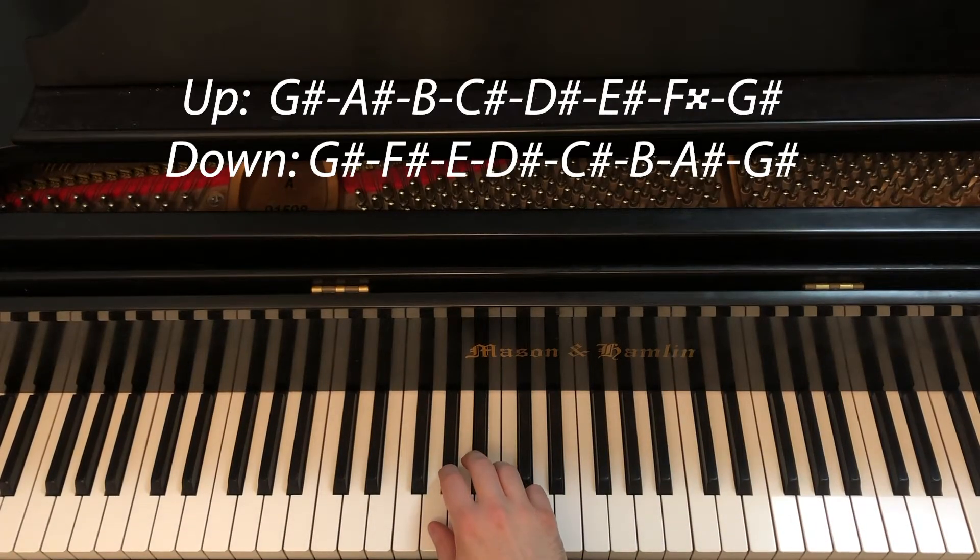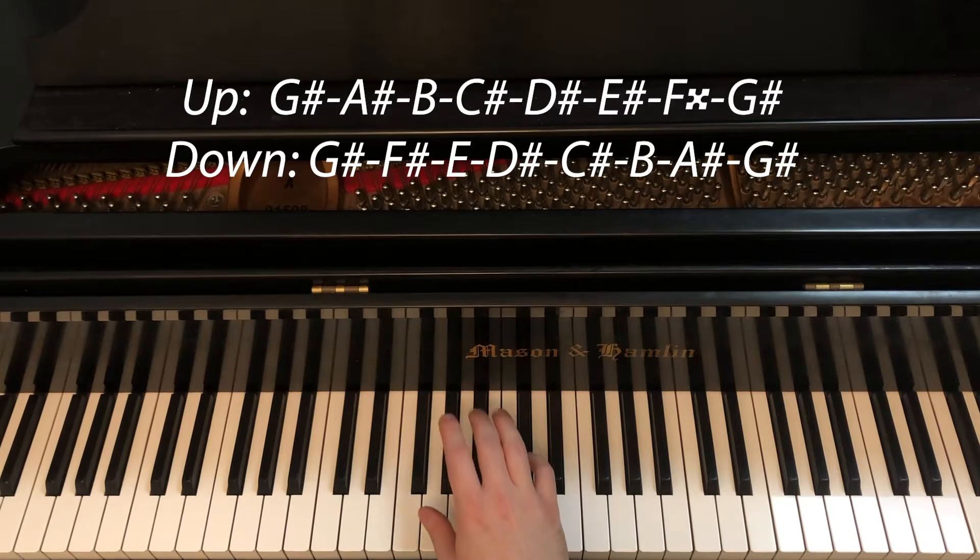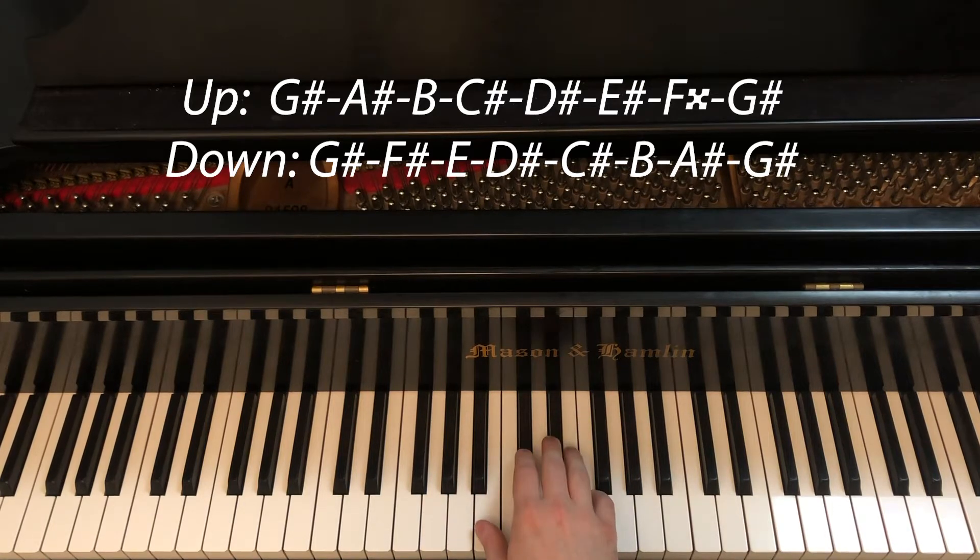G-sharp melodic minor in the right hand begins on the second finger on G-sharp. G-sharp, A-sharp, 2-3. Following that, we have the thumb on B-natural, and we have 1-2-3, B, C-sharp, D-sharp.